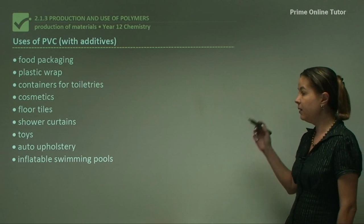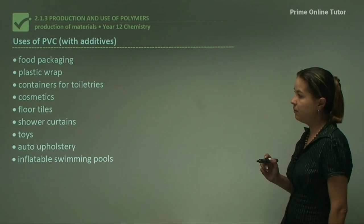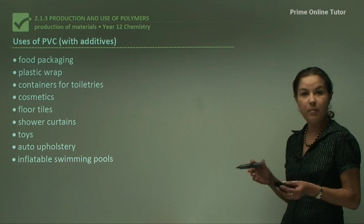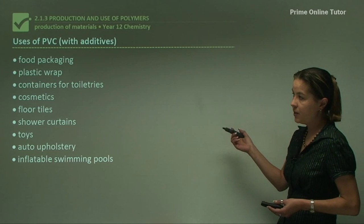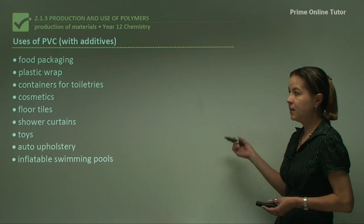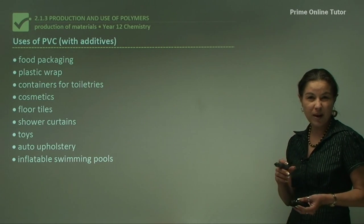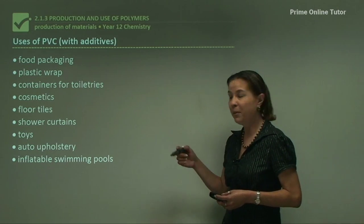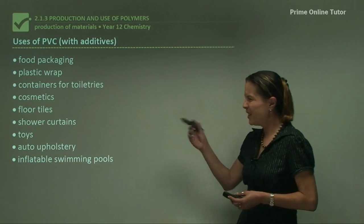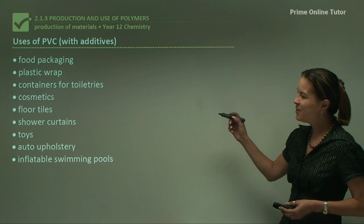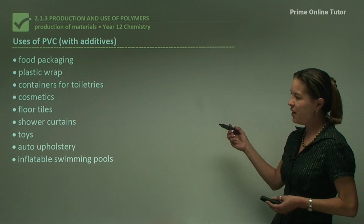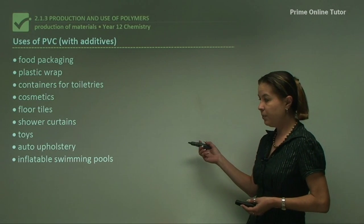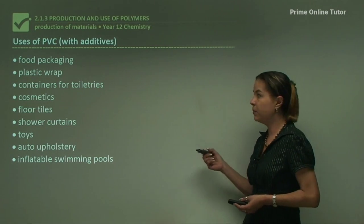There are many uses of PVC. Here's just a small list: food packaging such as the meat you buy in the supermarket, plastic wrap, containers for toiletries such as toothpaste, plastic containers, cosmetics, floor tiles, shower curtains, toys, auto upholstery, and inflatable swimming pools.